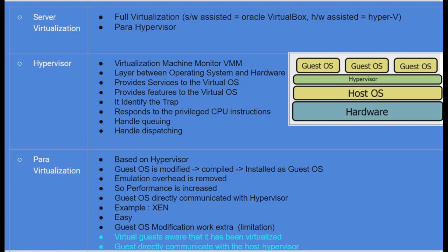In full virtualization, the guest operating system doesn't know that it is part of a virtual machine — the operating system itself does not know. In para virtualization, the guest directly communicates with the host hypervisor.